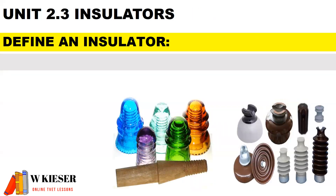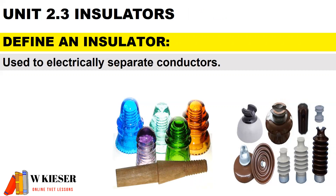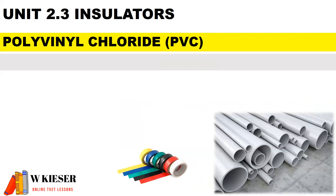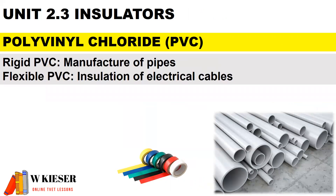Let's take a look at insulators. To define an insulator: it is used to electrically separate conductors. Polyvinyl chloride, also known as PVC, is the most common form of insulator. Rigid PVC is used for the manufacture of PARPs, and flexible PVC is used for insulation of electrical cables.